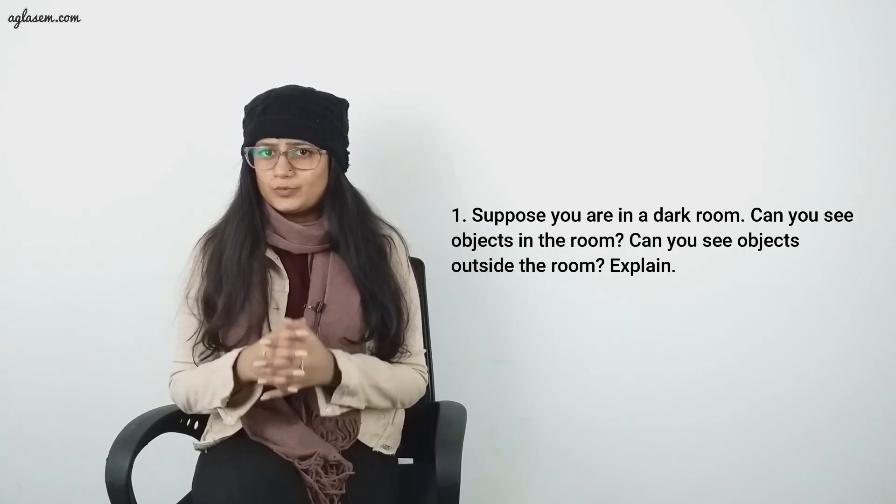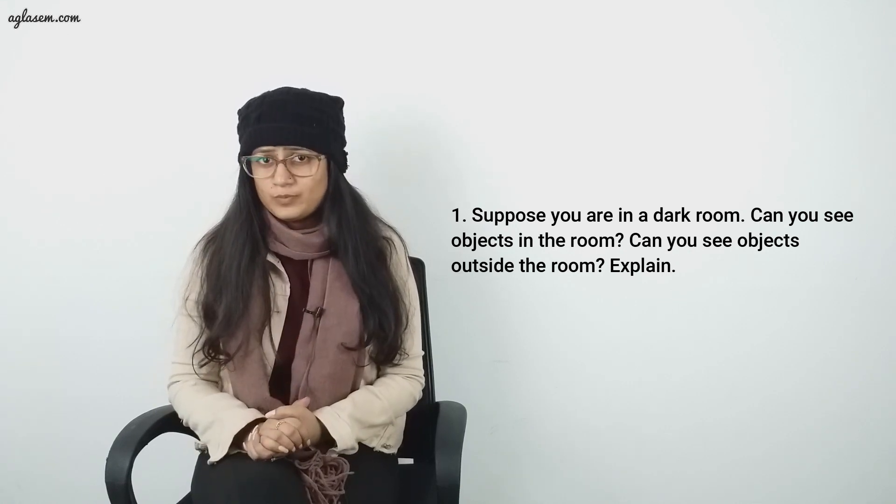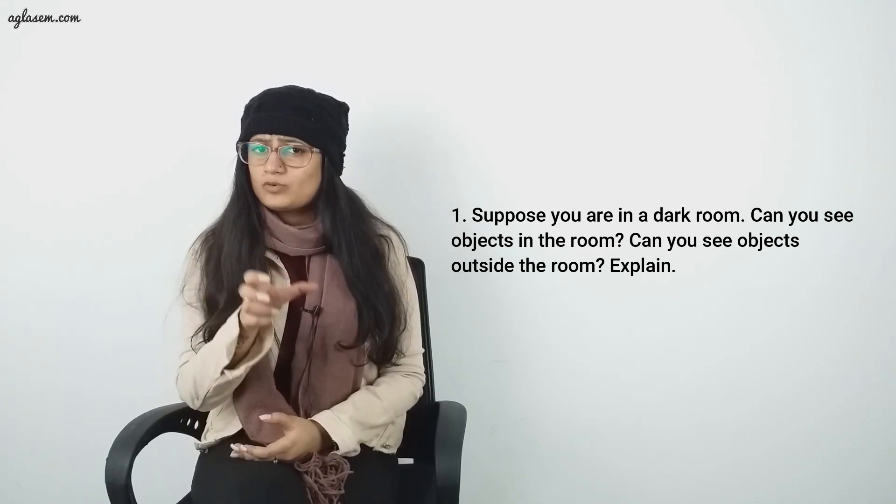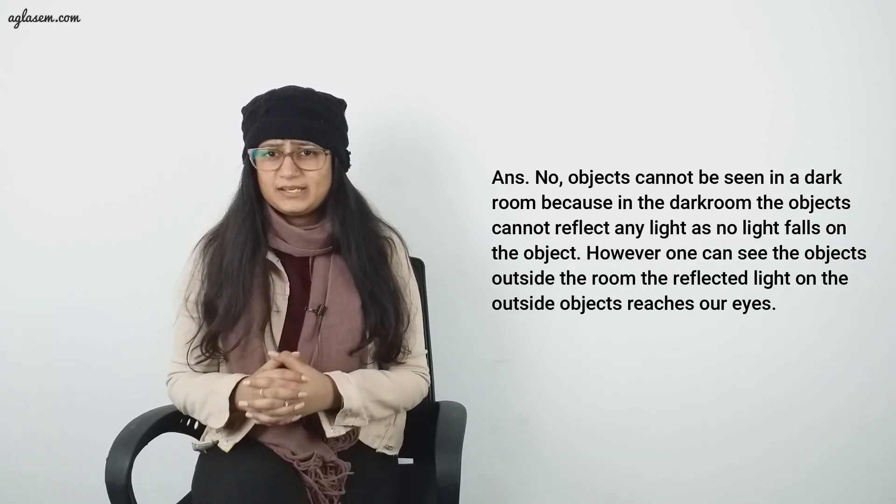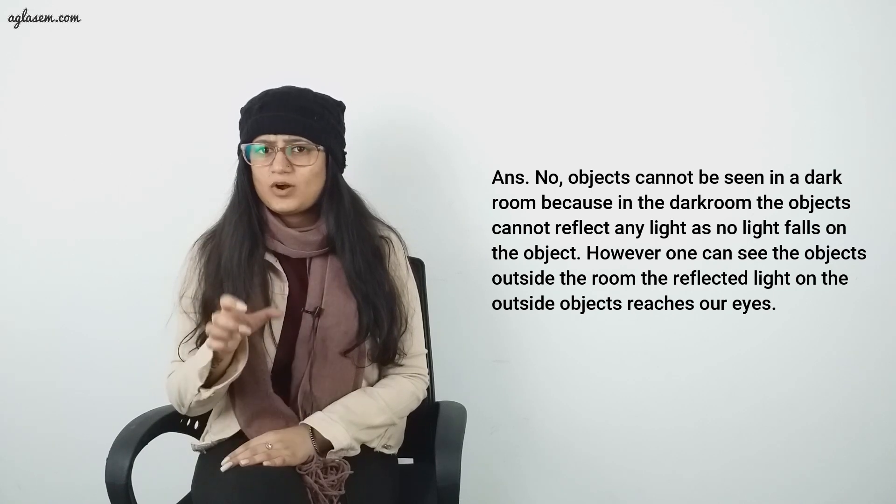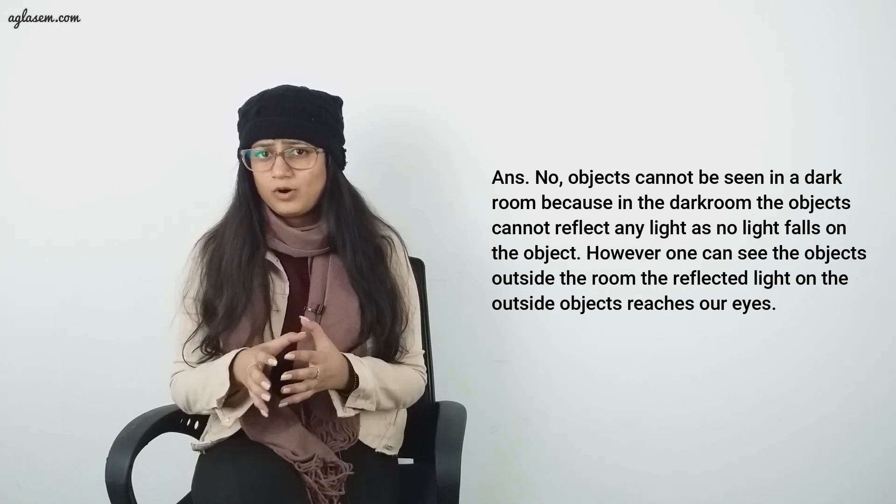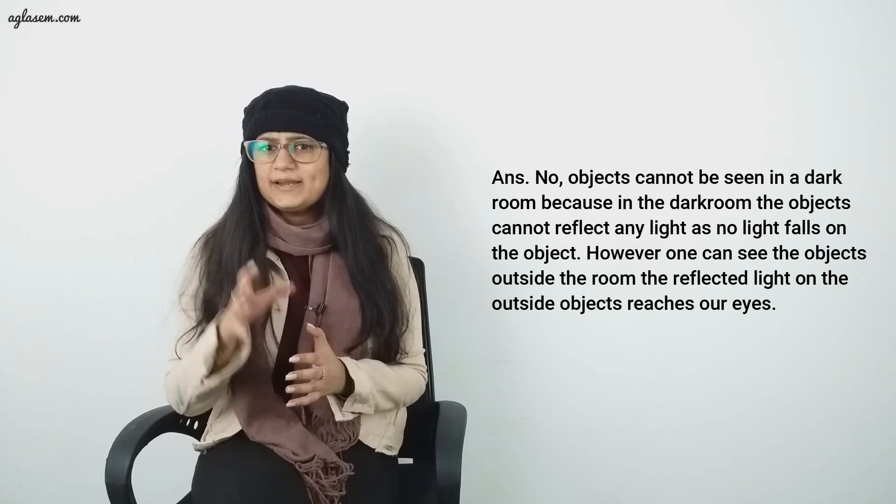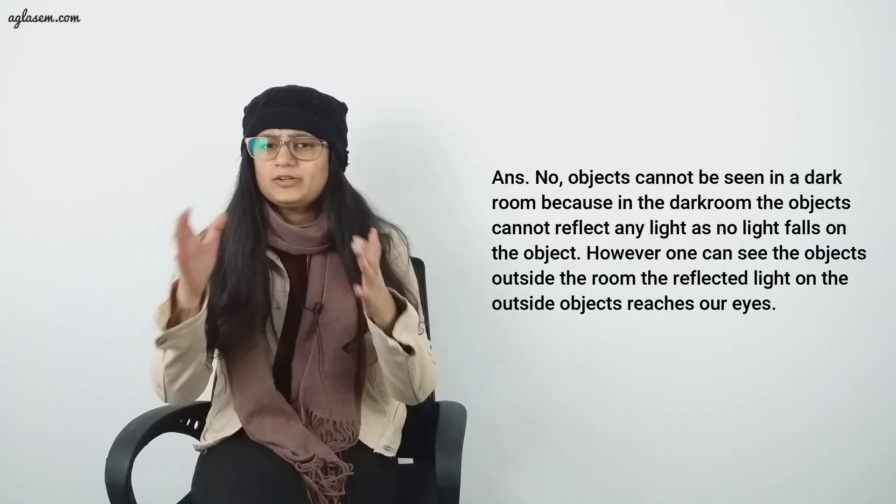Question 1: Suppose you are in a dark room. Can you see objects in the room? Can you see the objects outside the room? Explain. Answer: No, objects cannot be seen in a dark room because all the objects cannot reflect any light as no light falls on the object. However, one can see the objects outside the room. The reflected light on the outside objects reaches our eyes.